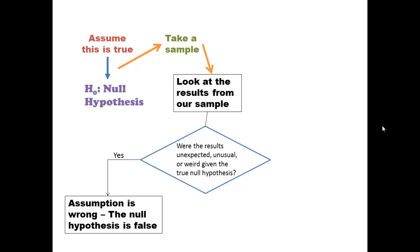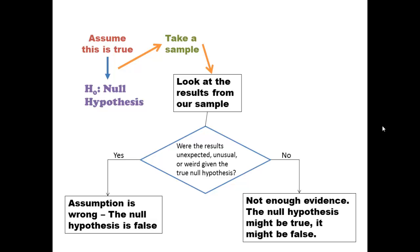But if our sample results are not all that far from what we expected from the null, then we don't know. We don't have enough evidence to say the null hypothesis is false. We're not saying it's true, just that we don't have evidence to say it's false.